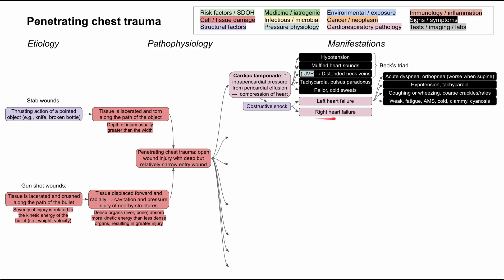Right heart failure is also worth discussing. When the right ventricle fails to pump forward, fluid backs up into the systemic circulation. You can have peripheral edema in the lower extremities, hepatosplenomegaly as blood backs up into the spleen and liver, and the hepatojugular reflex as the inferior vena cava becomes a column of blood. Pressing on somebody's liver will cause that column of blood to rise into the jugular vein, and jugular venous distension will be visible in the neck.